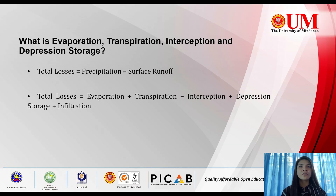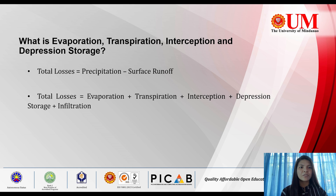So first, what is evaporation, transpiration, interception, and depression storage? All of these are processes of hydrologic obstructions or losses from precipitation, meaning not all precipitation goes to surface runoff. It is because of these hydrologic obstructions.